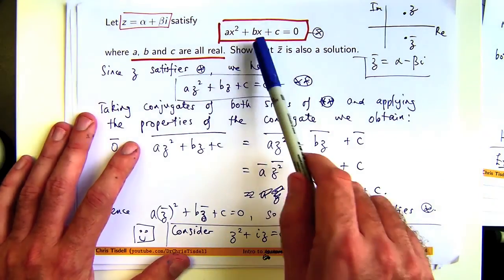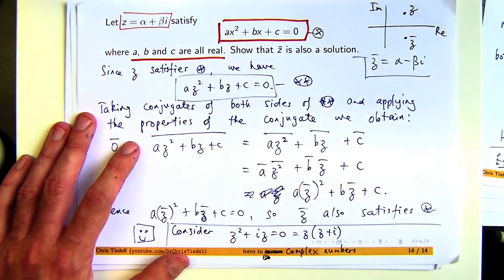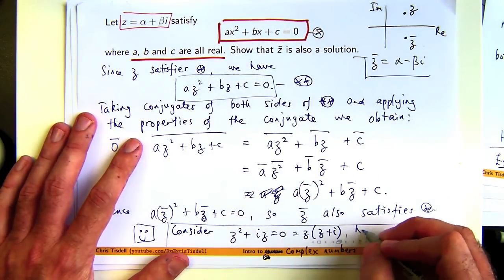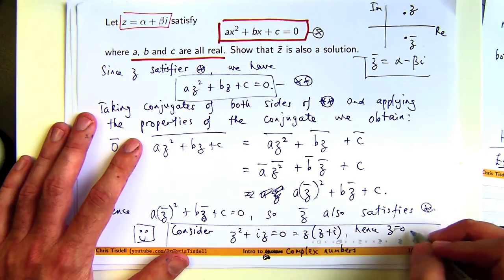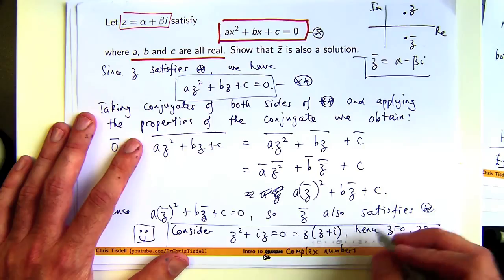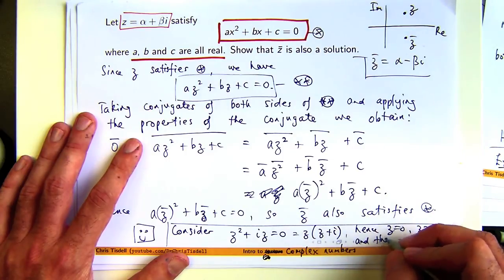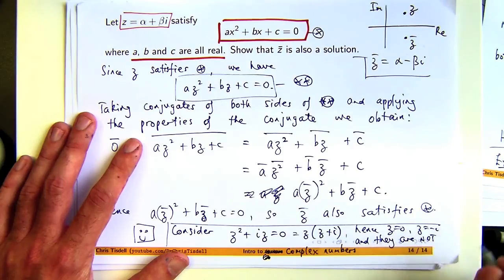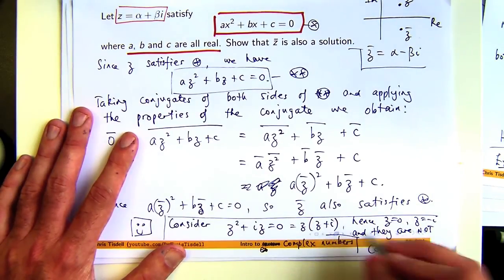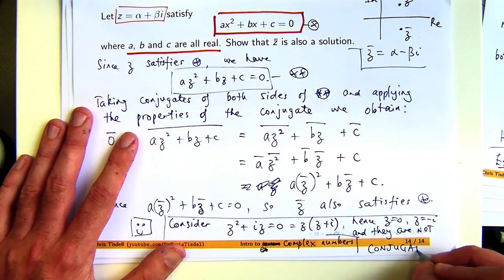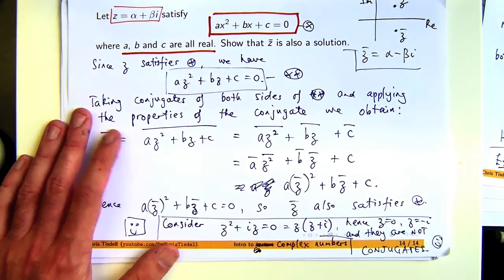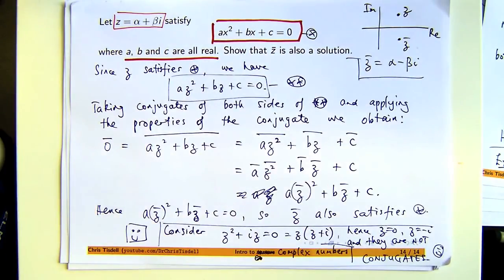if we change the coefficients here to complex numbers, the idea no longer works. Well, not necessarily. They are not conjugates, or conjugate pairs. So we can generalize this to polynomial equations with real coefficients of any degree. But if the coefficients are complex, the idea doesn't necessarily work.